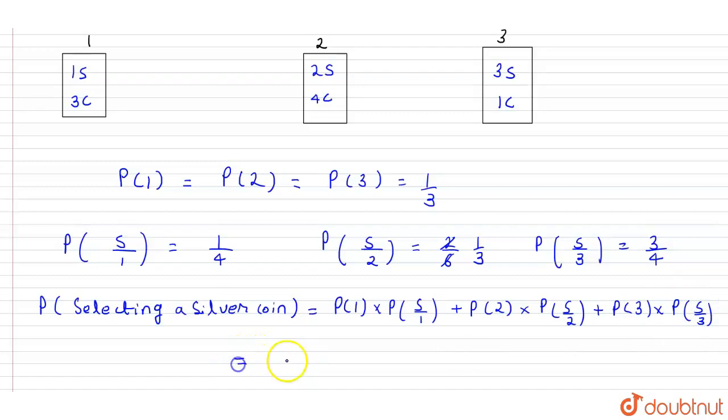The probability of selecting each purse is 1 by 3, so this becomes 1 by 3 times 1 by 4, plus 1 by 3 times 1 by 3, plus 1 by 3 times 3 by 4.